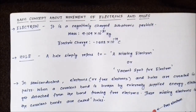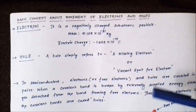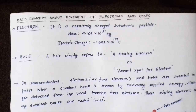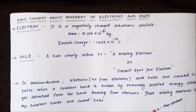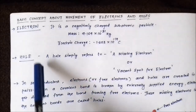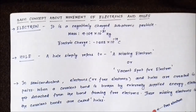An electron is a negatively charged subatomic particle which revolves around the nucleus in certain well-defined paths called orbits, according to Bohr's atomic model — we have all studied that. So what is this new concept called a hole?